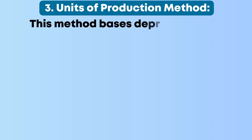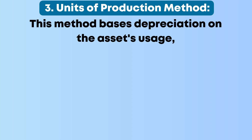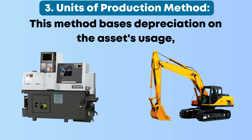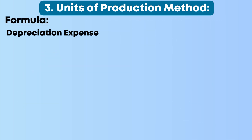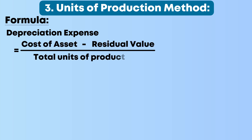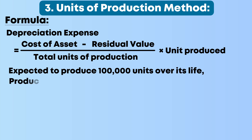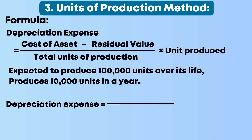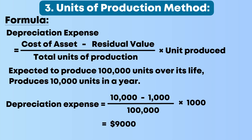3. Units of production method: This method bases depreciation on the asset's usage, making it ideal for machinery or equipment. The formula is: Depreciation Expense = (Cost of Asset − Residual Value) ÷ Total Units of Production × Units Produced. If the machine is expected to produce 100,000 units over its life and produces 10,000 units in a year, the depreciation expense would be: ($10,000 − $1,000) ÷ 100,000 × 10,000 = $900.